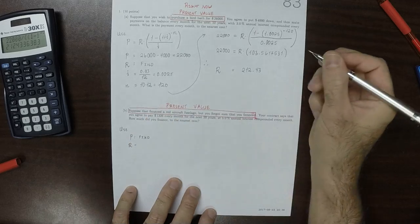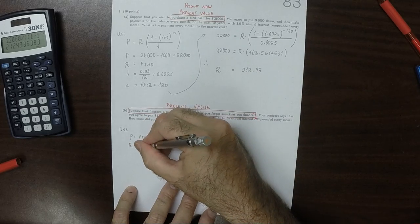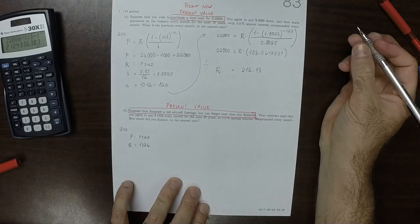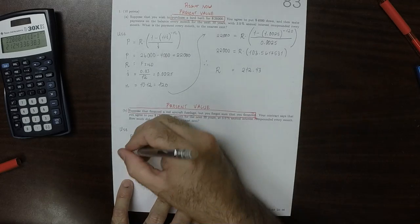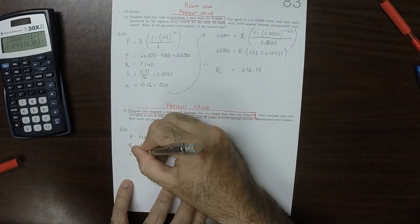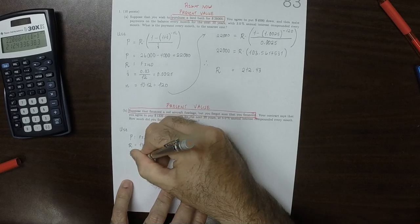R, the story says, is $13.26. That's how much you pay every month. i is 0.05 divided by 12.